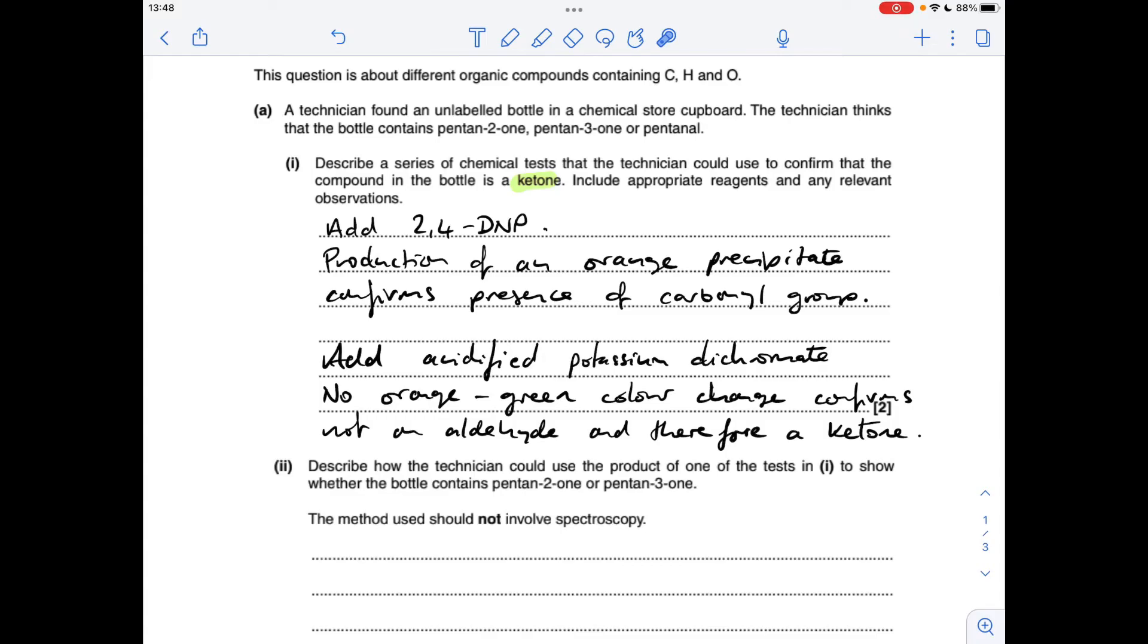Okay, so I'll make a start. To confirm that the compound is a ketone, the first thing I'm going to do is show that it's a carbonyl, so it's got that C double bond O group in it. The way you do that is add 2,4-DNP, and production of an orange precipitate confirms the presence of the carbonyl group.